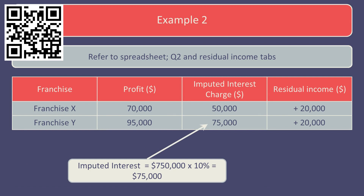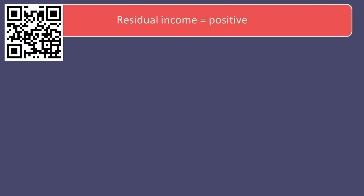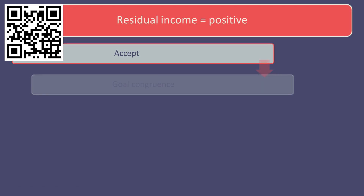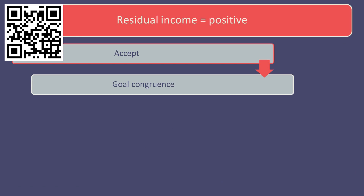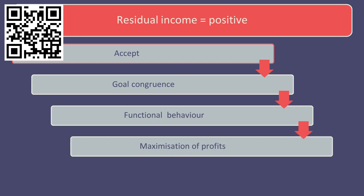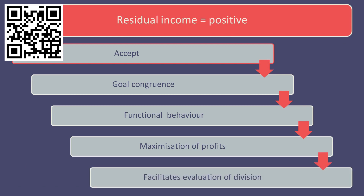Using residual income as a basis for making a decision would result in the investments in franchise X and franchise Y being accepted, given that the residual income for both investments is positive. Accepting these investments would also be in the best interest of the company, meaning divisional and company goal congruence would be achieved. As the divisions are acting in the best interest of the company, it would also be easier to fairly assess divisional performance.